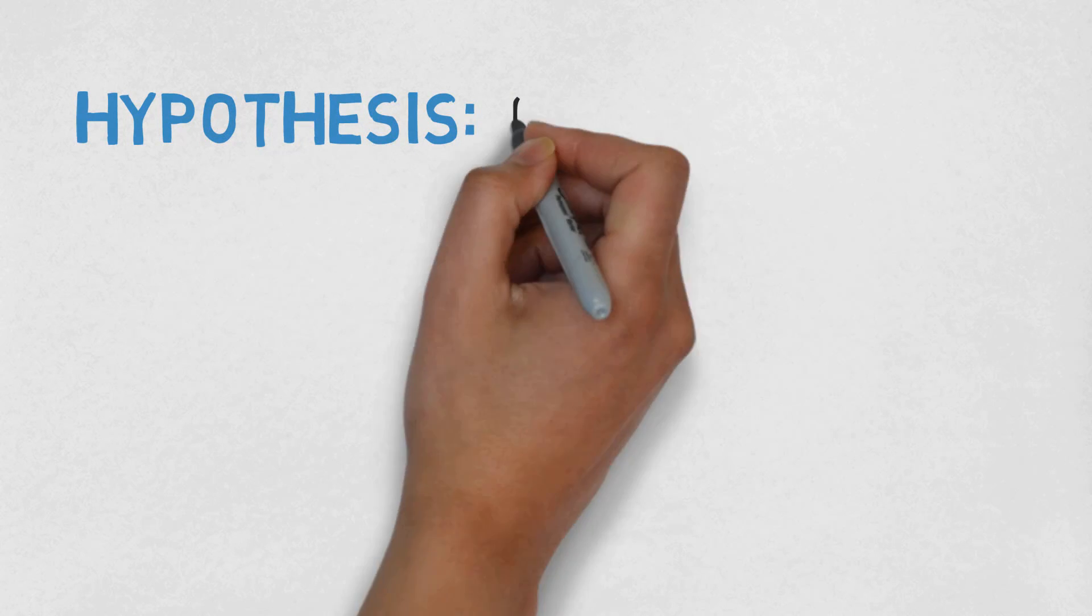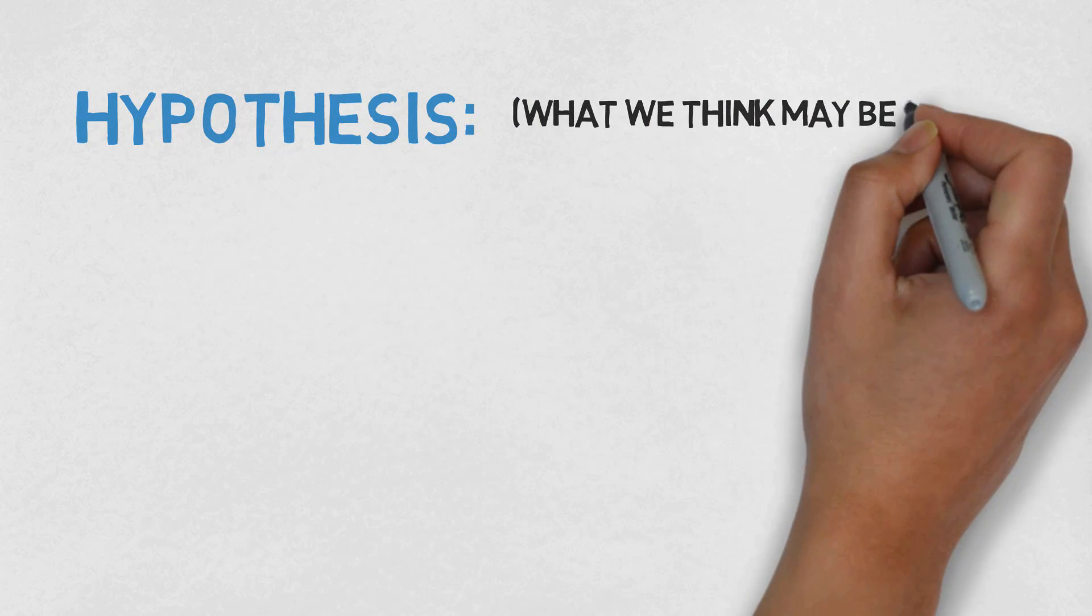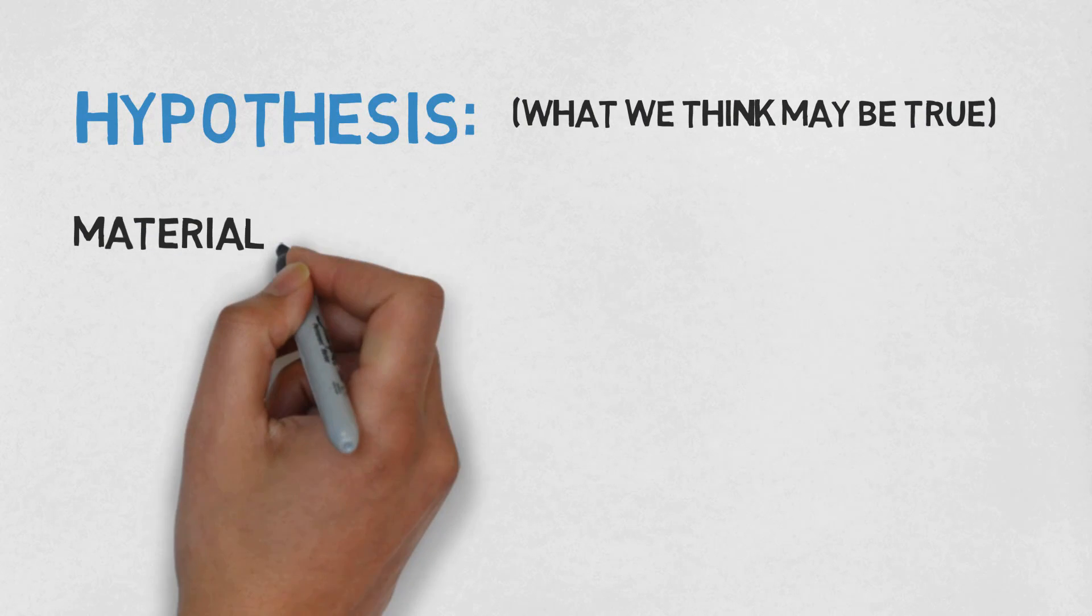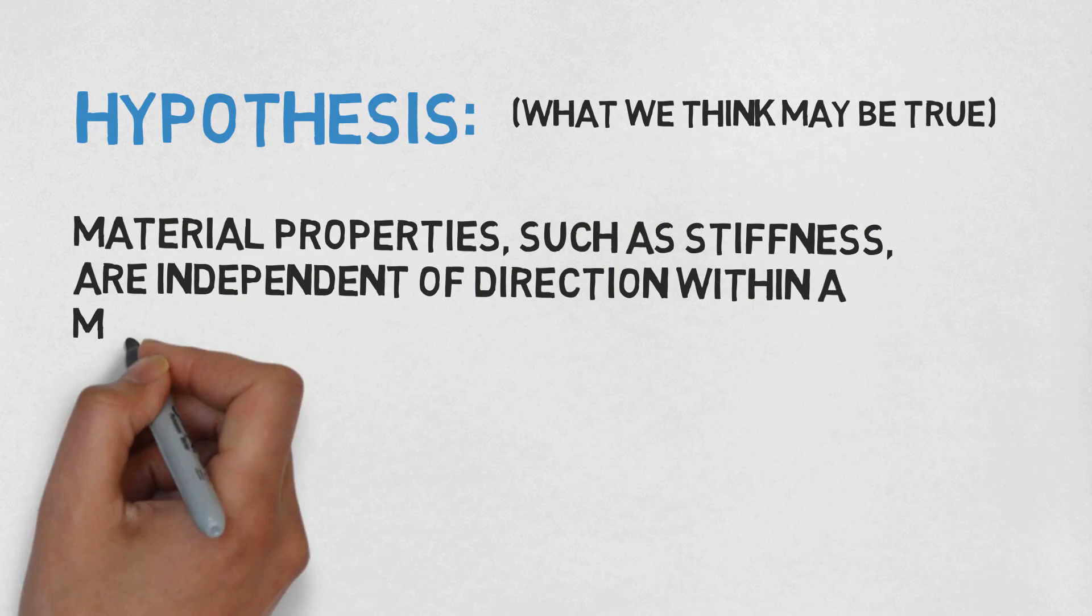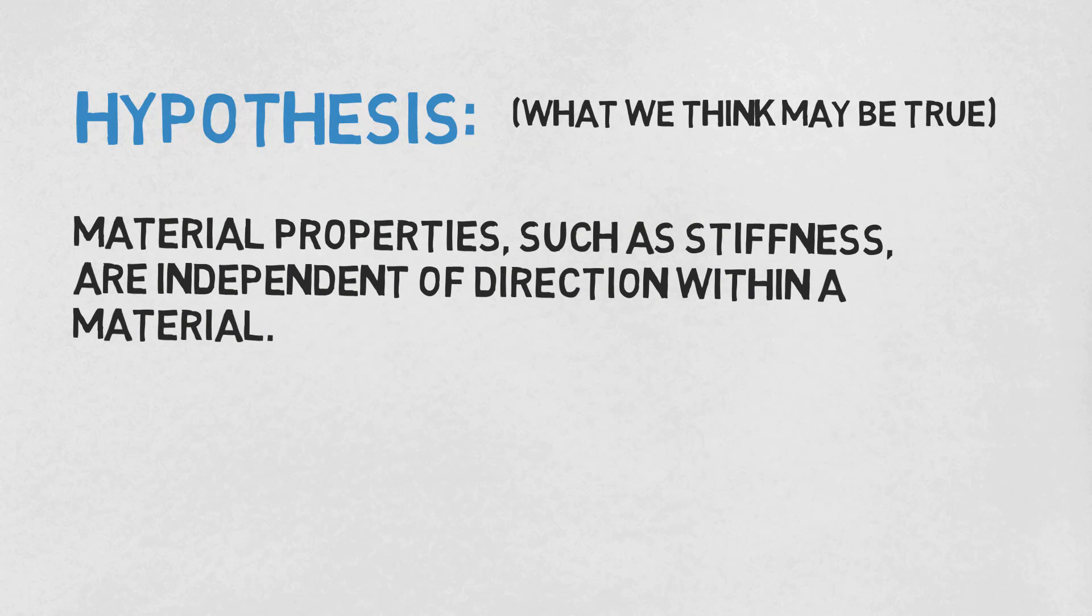I believe that material properties will not vary, so I will make the following hypothesis: Material properties, such as stiffness, are independent of direction within a material. It's not important to be correct with our hypothesis here. We just want to word it in a way that we can design a possible experiment to challenge it.